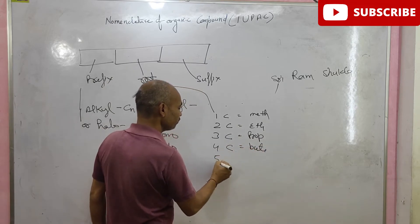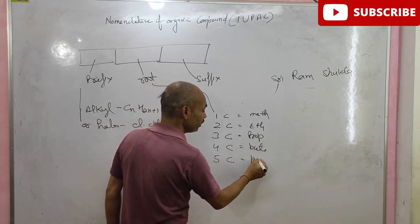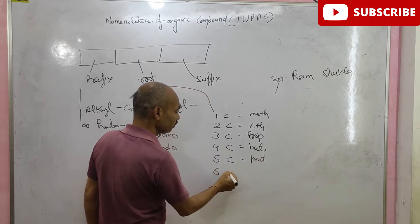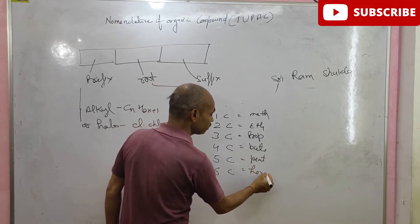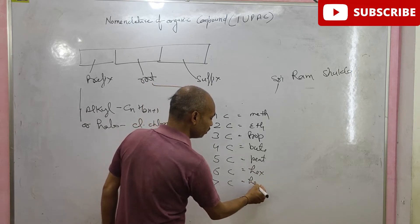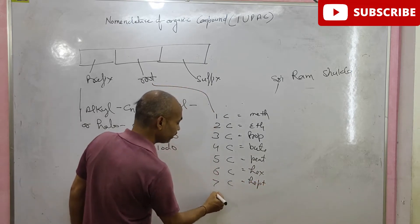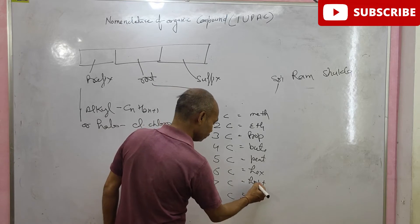Five carbon atoms, pent. Six carbon atoms, hex. Seven carbon atoms, hept. Eight carbon atoms, oct.